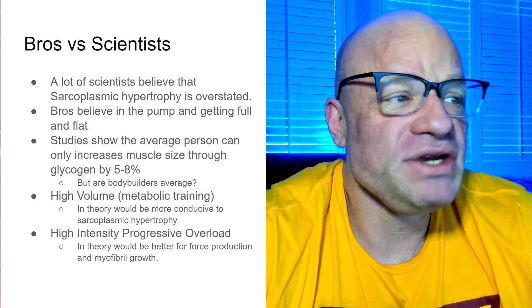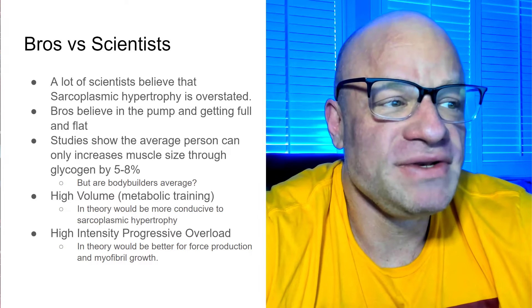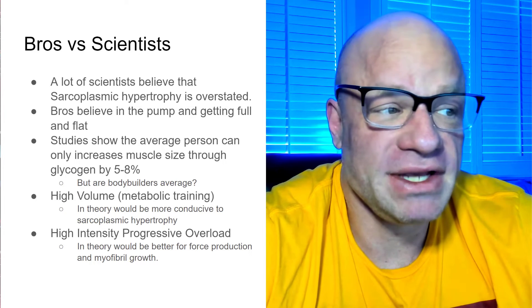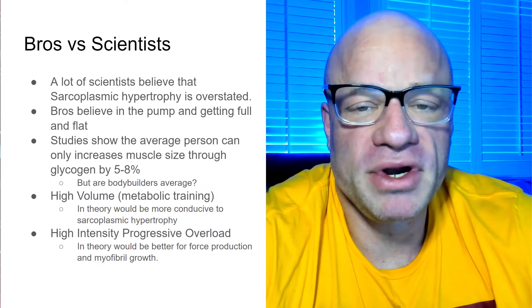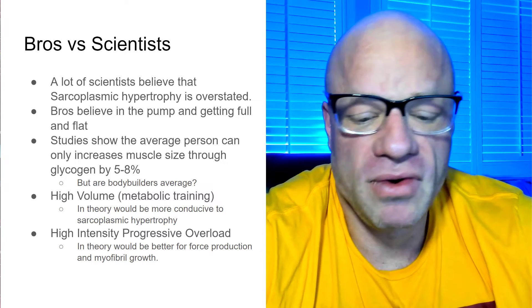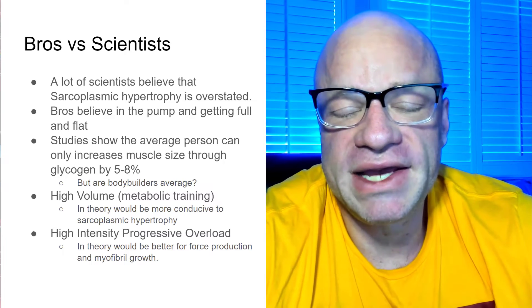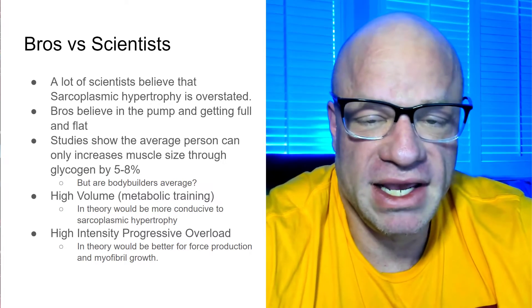Clearly, he had a higher capacity for glycogen storage than your average person does. So, I don't know if you can use the average person as an indicator of how much glycogen a bodybuilder can store. High-volume metabolic training in theory would be more conducive to sarcoplasmic hypertrophy. High-intensity progressive overload in theory would be better for force production and myofibril growth, although scientists say now that that's probably not the case.